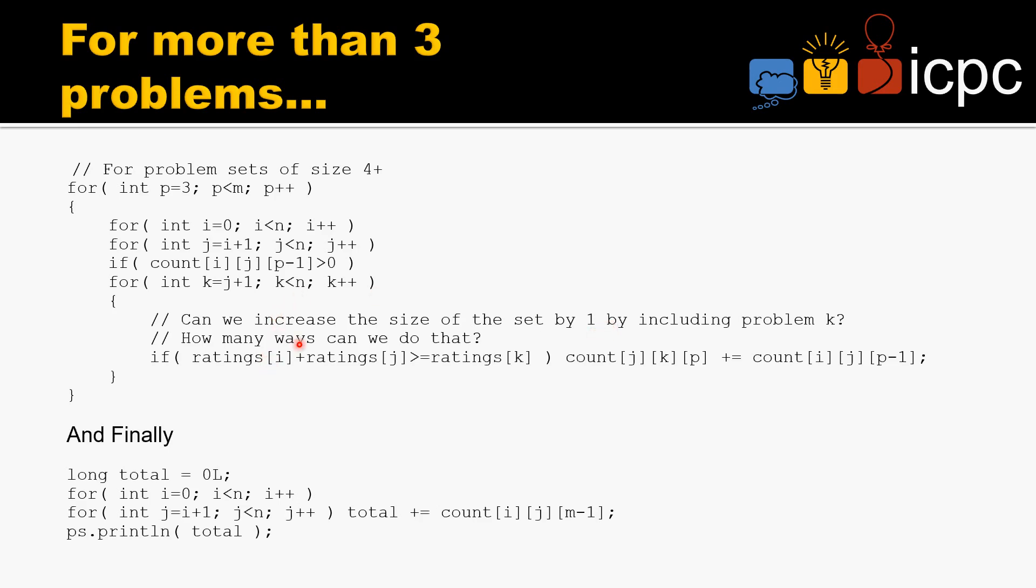Well, if ratings[i] plus ratings[j] is greater than or equal to ratings[k], then we can add in the number of things we had at one problem fewer with i, j being the two largest. We can add that into this many problems with j, k being the largest.